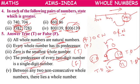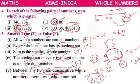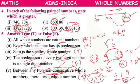Between any two non-consecutive whole numbers, there lies a whole number — True. Consecutive means immediate, like 7, 8, 9. Non-consecutive means like 7 and 9, where 8 lies between them. So the statement is true.